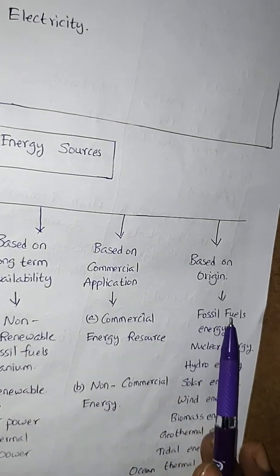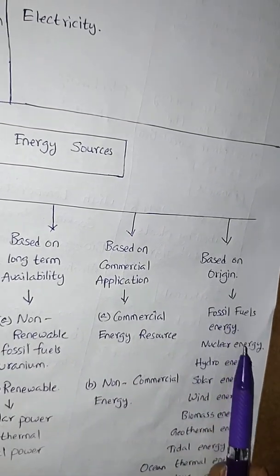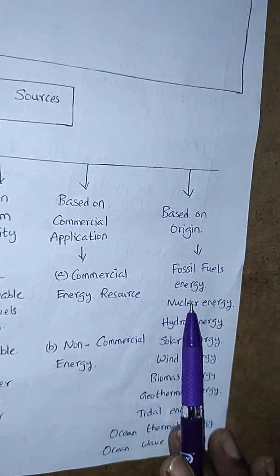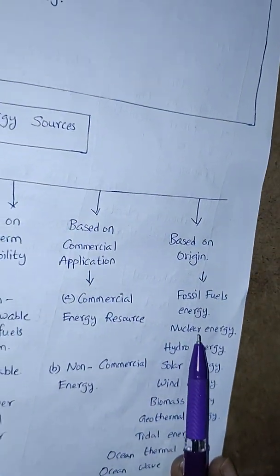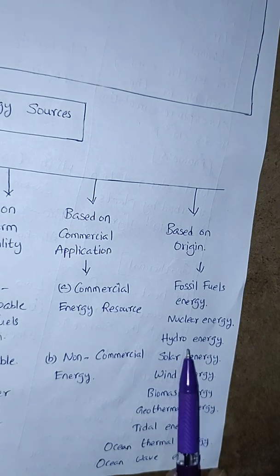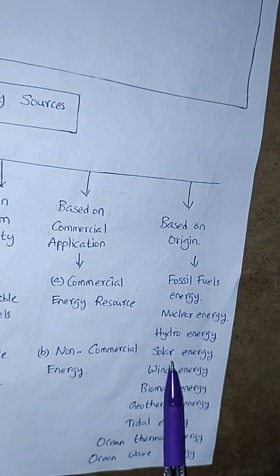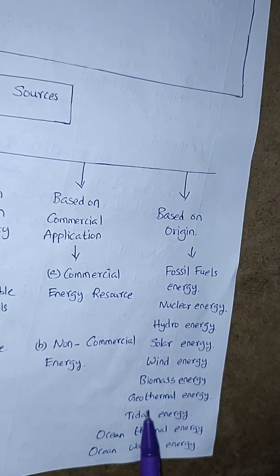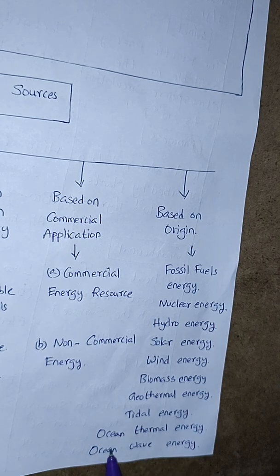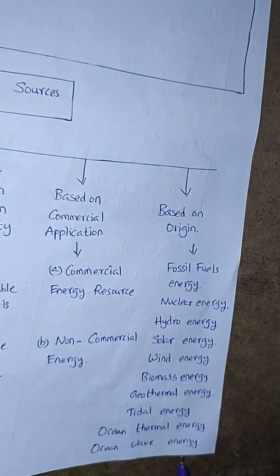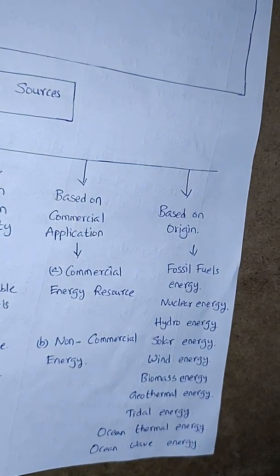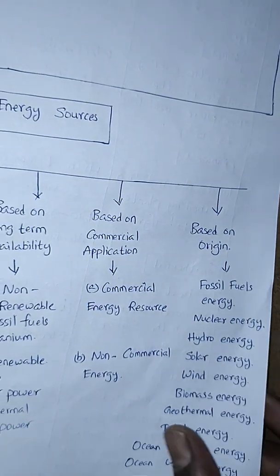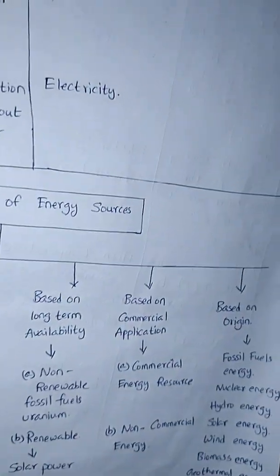Based on origin, there are many types: fossil fuels energy, nuclear energy, hydro energy, solar energy, wind energy, biomass energy, geothermal energy, tidal energy, ocean thermal energy, and ocean wave energy. You have to include all these in your answer on classification of energy sources.